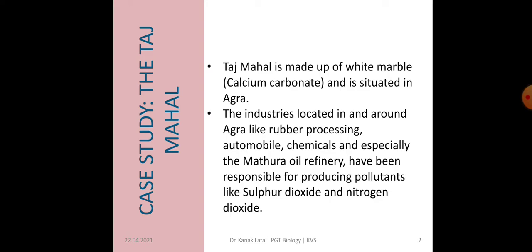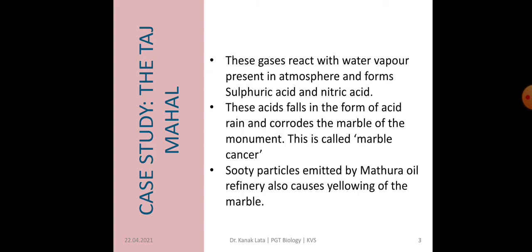These industries are responsible for producing large amounts of pollutants like sulfur dioxide and nitrogen dioxide. These pollutants, that is sulfur dioxide and nitrogen dioxide, combine with water vapor present in the atmosphere and result in the formation of sulfuric acid and nitric acid. And when these acids fall in the form of acid rain, then it corrodes the marble of the monument, that is Taj Mahal.